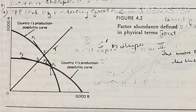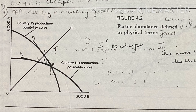The nature of this bias can be explained with the help of a figure, where it is assumed that good A is the capital-intensive good and good B is the labor-intensive good. If both countries were to produce the goods in the same proportion — say along a ray OR — country one would be producing at point S' on its production possibility curve and country two at point S. The slope of country one's production possibility curve at S' is steeper than country two's curve at S. This implies that good A would be cheaper in country one than in country two, and good B would be cheaper in country two.